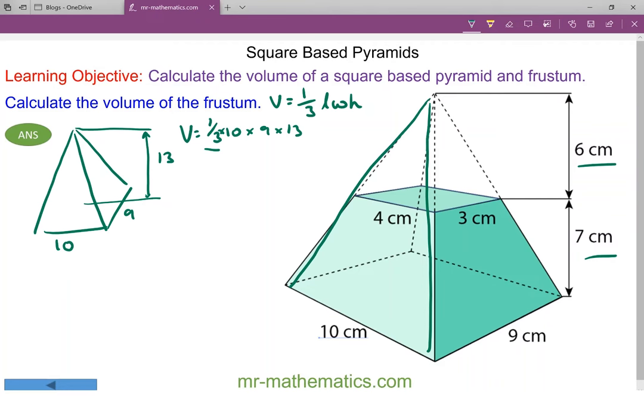One third of 9 is 3, so we can write this as 3 multiplied by 10 and 13. 3 times 13 is 39, so the volume is going to be 390 centimeters cubed. That's the volume of the biggest rectangular based pyramid.